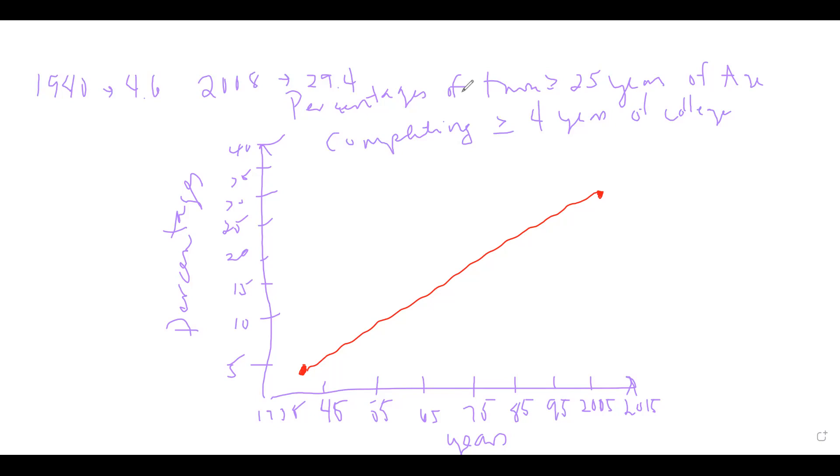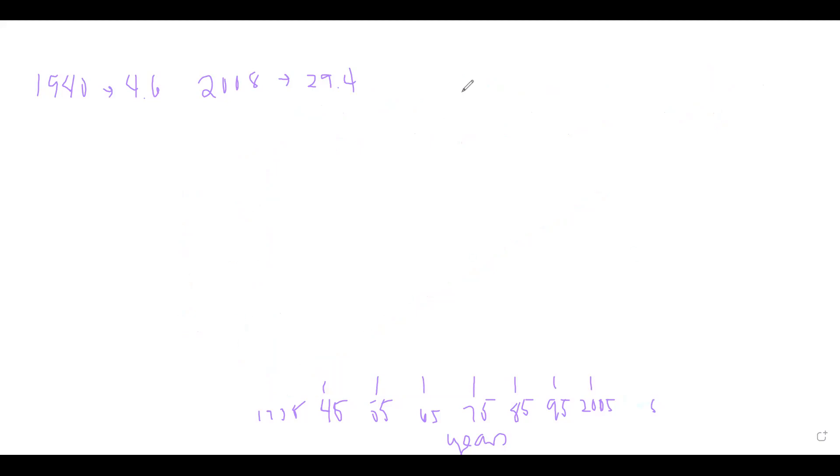Now, part B asks us to find the average rate of change. So I'm going to get rid of this graph. I'm just going to erase it. Erasing is oddly relaxing. Okay. So part B, the average rate of change per year. Because it's per year, I'm going to take my 29.4. That is much worse.